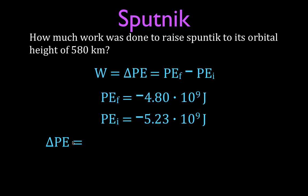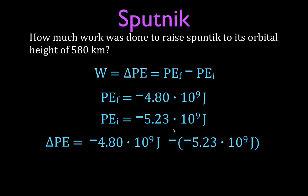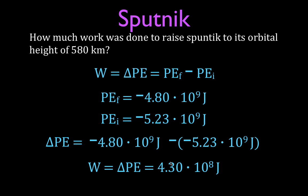Plugging in the values: ΔPE equals final minus initial, which is minus 4.80 times 10 to the ninth joules minus the quantity minus 5.23 times 10 to the ninth joules. A minus times a minus gives a plus, so this becomes minus 4.80 times 10 to the ninth plus 5.23 times 10 to the ninth joules. The result is that the change in potential energy — and the work required to get Sputnik into orbit, not considering the atmosphere — is 4.30 times 10 to the eighth joules.